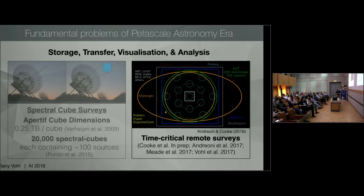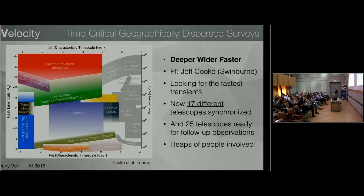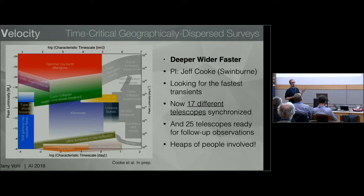For time domain astronomy, these kinds of rooms can be very helpful. I've been part of a project called the Deeper Wider Faster survey that looks for the fastest transients in the universe. The PI is Jeff Cooke at Swinburne and it's a very large collaboration involving people at Caltech and elsewhere. We want to explore the parameter space from milliseconds to minutes that hasn't been explored much yet. The idea is to collect data from about 17 telescopes looking at the same patch of sky simultaneously, with about 25 other telescopes around the globe ready to follow up if anything interesting is reported.